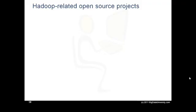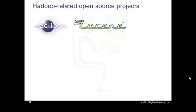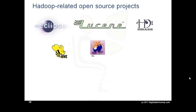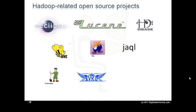This is a list of other open source projects related to Hadoop. Eclipse is a popular IDE donated by IBM to the open source community. Lucene is a text search engine library written in Java. HBase is the Hadoop database. Hive provides data warehousing tools to extract, transform and load data and query this data stored in Hadoop files. Pig is a platform for analyzing large data sets — a high-level language for expressing data analysis. JAQL is a query language for JavaScript Object Notation. Zookeeper is a centralized configuration service and naming registry for large distributed systems. Avro is a data serialization system. UIMA is the architecture for the development, discovery, composition and deployment for the analysis of unstructured data.